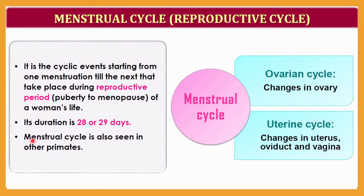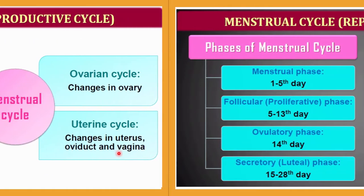The menstrual cycle is also seen in other primates such as monkeys and apes. The cycle can be divided into two parts: the ovarian cycle, which refers to changes in the ovary, and the uterine cycle, which refers to changes in the uterus, oviduct, and vagina.